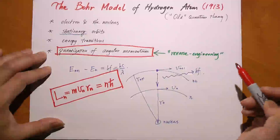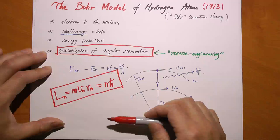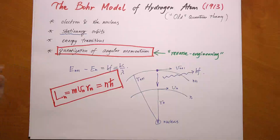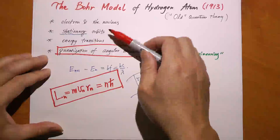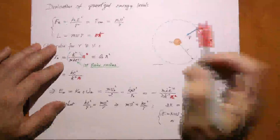How did Bohr get that? We can call it reverse engineering. He had the theory and the experimental result, and found that in order to match the two, you have to have this quantization condition—otherwise it doesn't match. Let's see how these hypotheses lead to a correct match between theory and experiment. We're going to begin by calculating the allowed energy levels of an electron in a hydrogen atom.